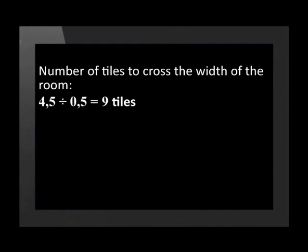To calculate the number of tiles in a row, we divide the width of the room, which is 4.5 meters, by the width of the tile, which is 0.5 meters. This gives us an answer of 9 tiles in one row. Did you notice that we converted the 50 centimeter units to 0.5 meters? We can only do calculations with values that have the same units of measure. This means both must be measured either in meters or centimeters.